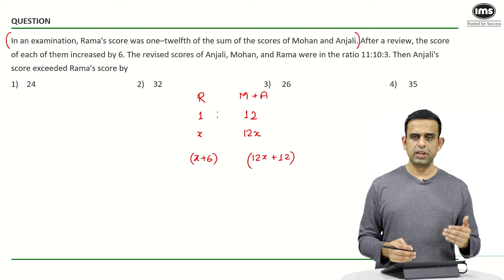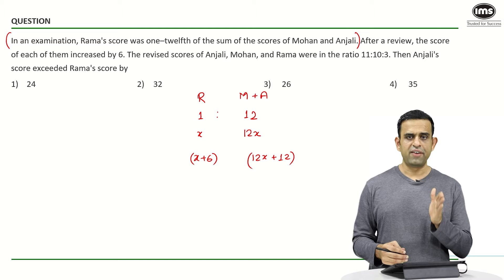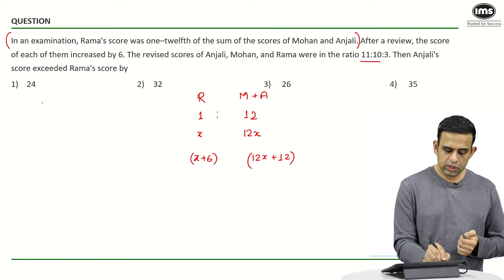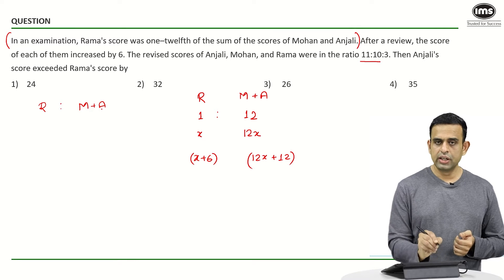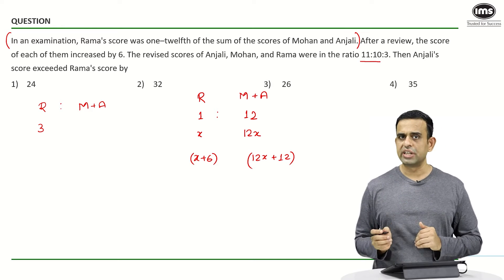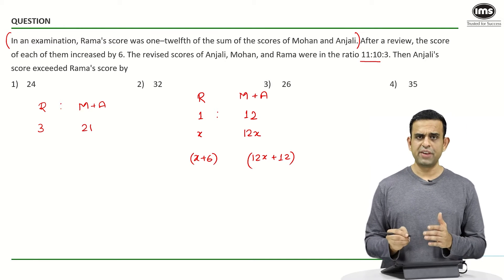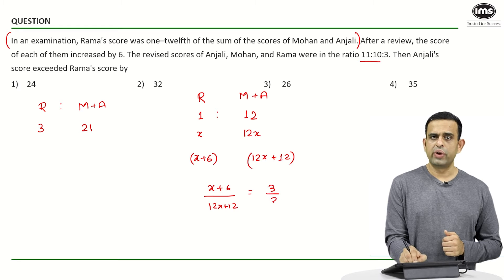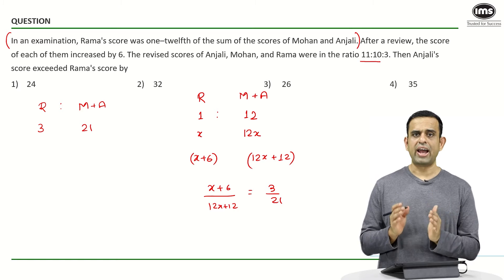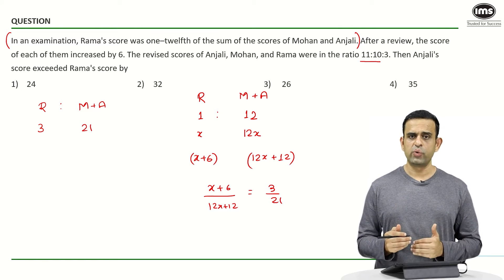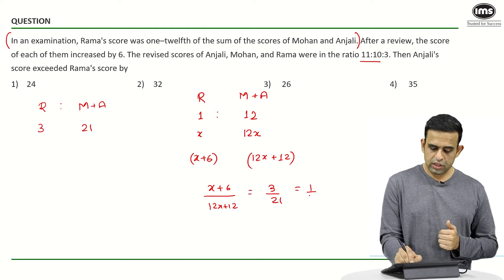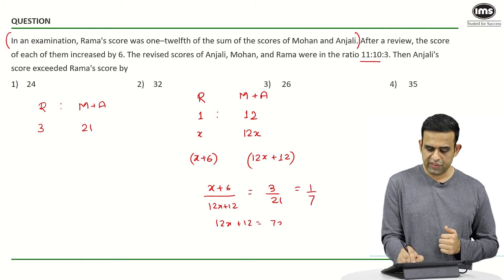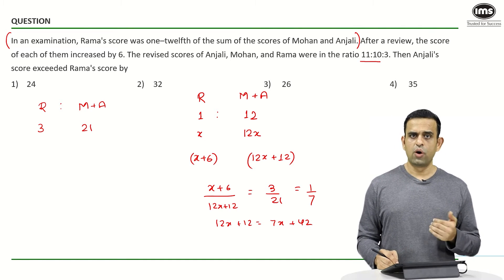The revised scores of Anjali, Mohan, and Rama come out to be in the ratio of 11 is to 10 is to 3. So the post-review ratio of Rama to Mohan plus Anjali combined is 3 is to 21 (adding 11 plus 10). So the ratio of (x plus 6) to (12x plus 12) must equal 3 by 21, or 1 by 7. Cross-multiplying gives 12x plus 12 equals 7x plus 42, so 5x equals 30, giving x equal to 6.